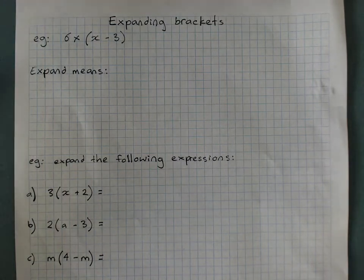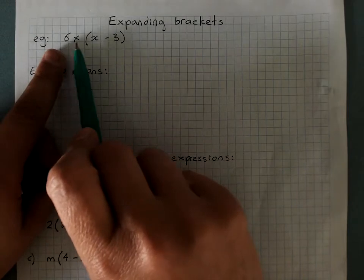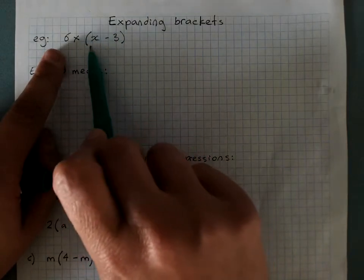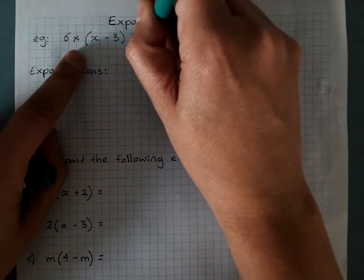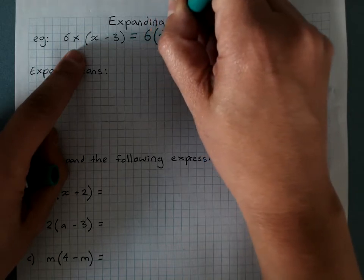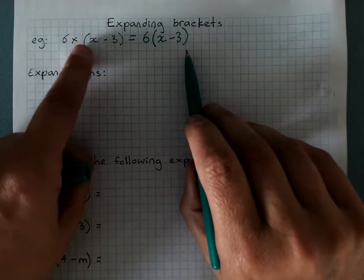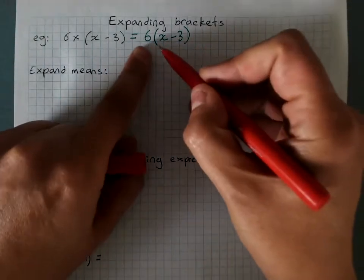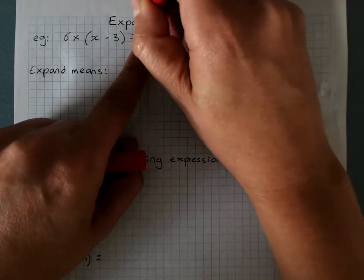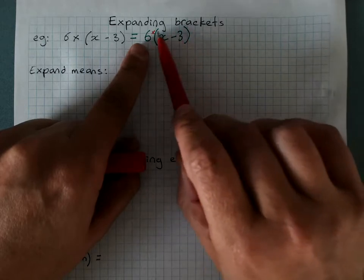Expanding brackets. In algebra, as you know, we don't use times signs. So if I wanted to do 6 times the result of x plus 3, I wouldn't write that times sign. I would write 6 and then just the brackets x minus 3. You'll see questions that look like this quite a lot. This problem — 6 times x minus 3 — has an invisible times sign, and it means 6 times everything in the brackets.